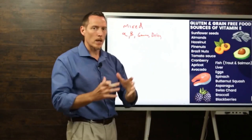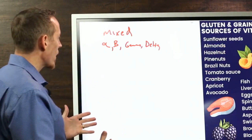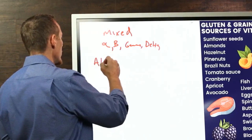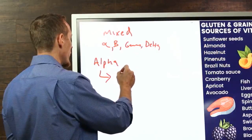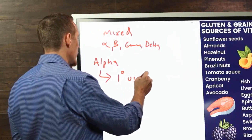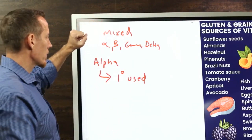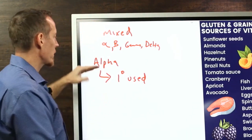If you're looking at a supplement bottle and you don't see all four — alpha, beta, gamma, and delta — then that's not a comprehensive mixture for vitamin E. The most active form of vitamin E is the alpha form, which is why it's the primary one used when doctors measure vitamin E levels and prescribe supplementation.